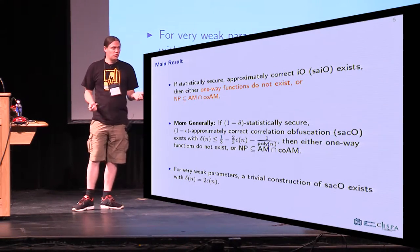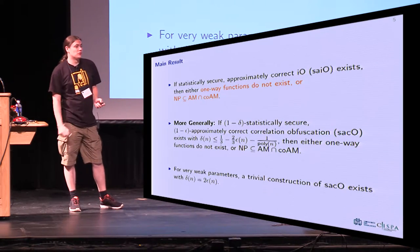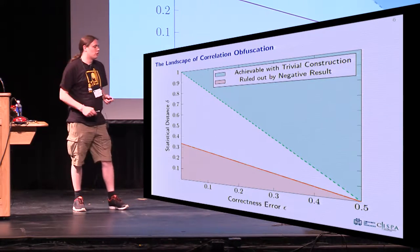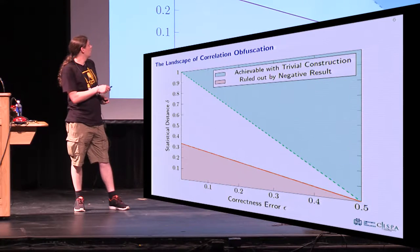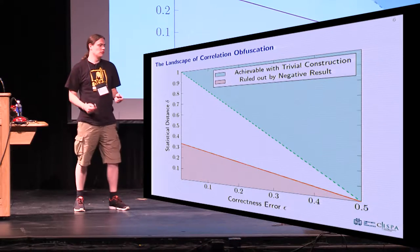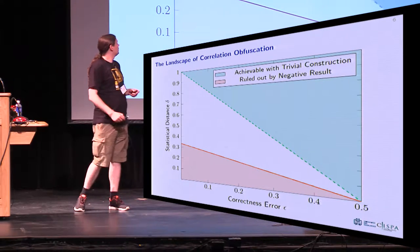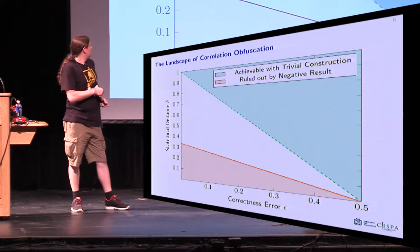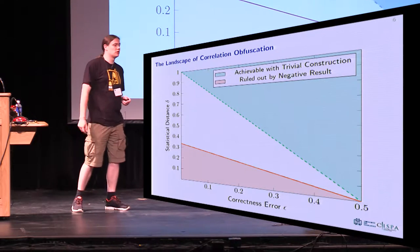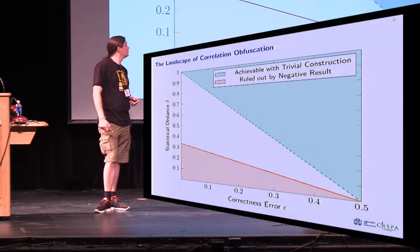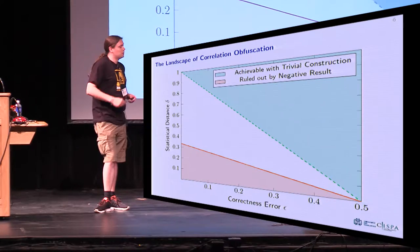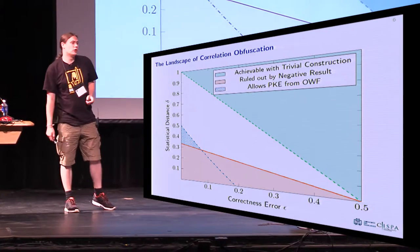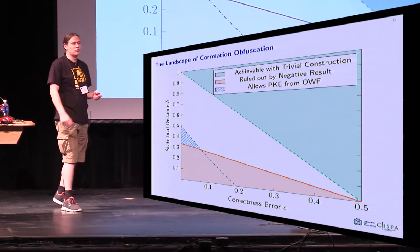However, for correlation obfuscation, we also have a positive result where we can, for very weak parameters, give a trivial construction. This gives us a landscape of correlation obfuscation where in the upper right we have a large area where we actually know a trivial construction. However, the construction is so trivial that we are pretty certain it is completely useless. On the other hand, we have the red range down here. In this range, we cannot construct correlation obfuscation with statistical security, unless the polynomial hierarchy collapses or one-way functions do not exist. We cannot rule out the full range of parameters that are actually useful for the transformation to public key encryption.